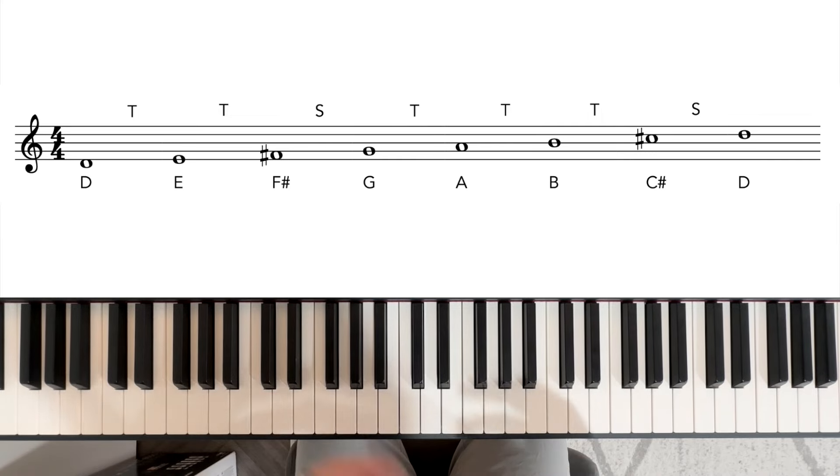The D major scale, as the name says, is going to start on the note D, and it uses the same major scale pattern: tone, tone, semitone, tone, tone, tone, semitone, or whole step, whole step, half step, whole, whole, whole, half step, as the other major scales we learned, the C, G, and F. Now let's try to work out these intervals, and let's see what happens when we don't get the interval we need.